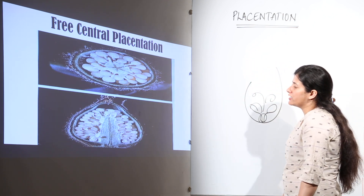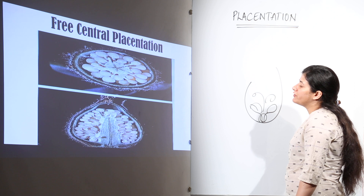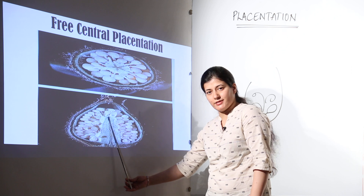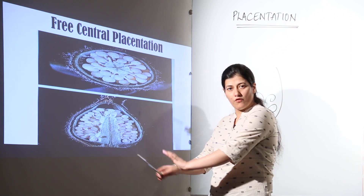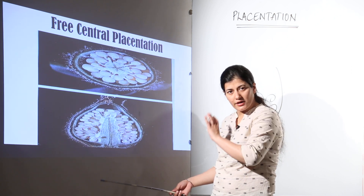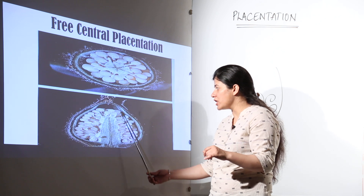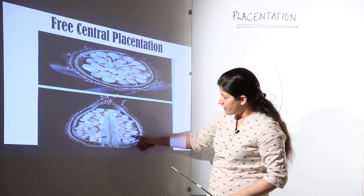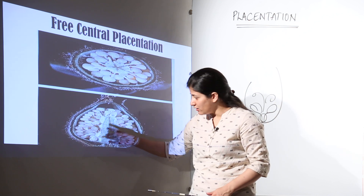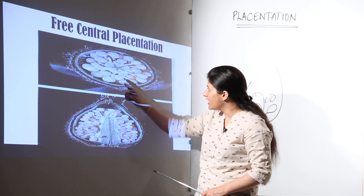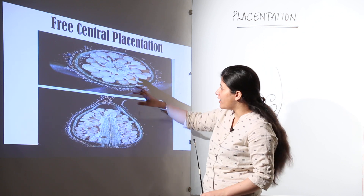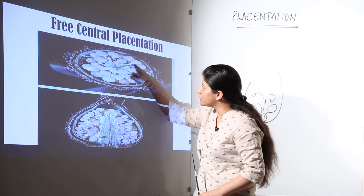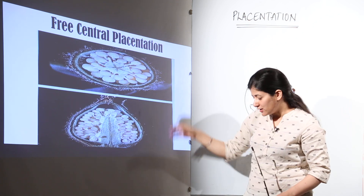Free central placentation: you can see the central cushion here. There is no ovarian locule formation and no septa. All the ovules are arranged in the central cushiony part. Observed from above, there is no septum or locule formation, but the ovules are arranged as shown in the diagram.